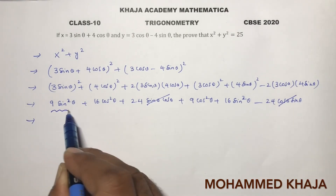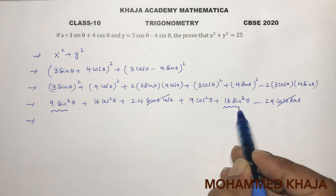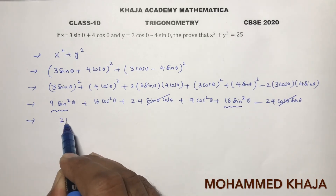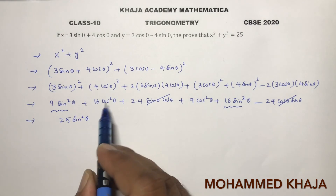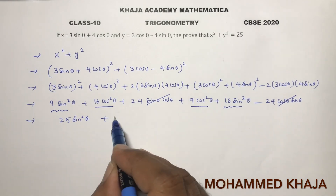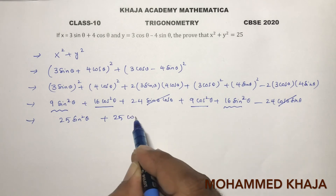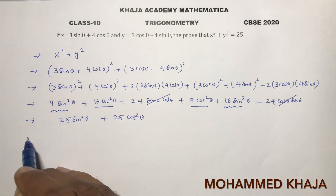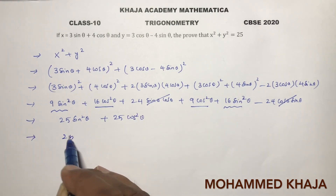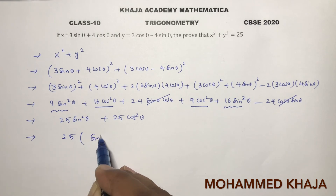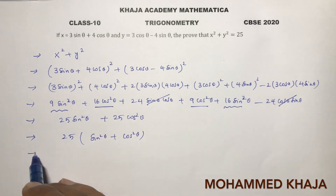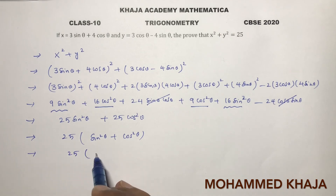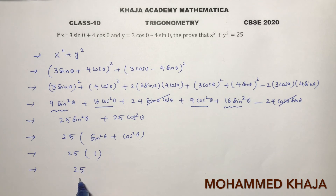Adding the like terms: 9 sin squared theta plus 16 sin squared theta equals 25 sin squared theta, and 16 cos squared theta plus 9 cos squared theta equals 25 cos squared theta. Taking 25 common gives 25 times (sin squared theta plus cos squared theta). Since sin squared theta plus cos squared theta equals 1, the result is 25 times 1, which is 25.